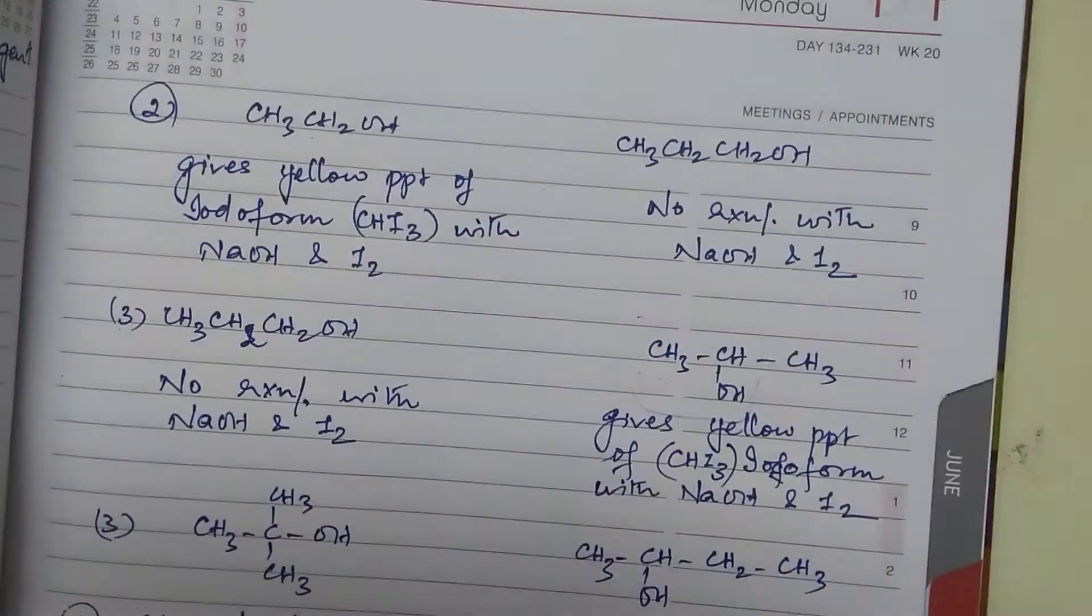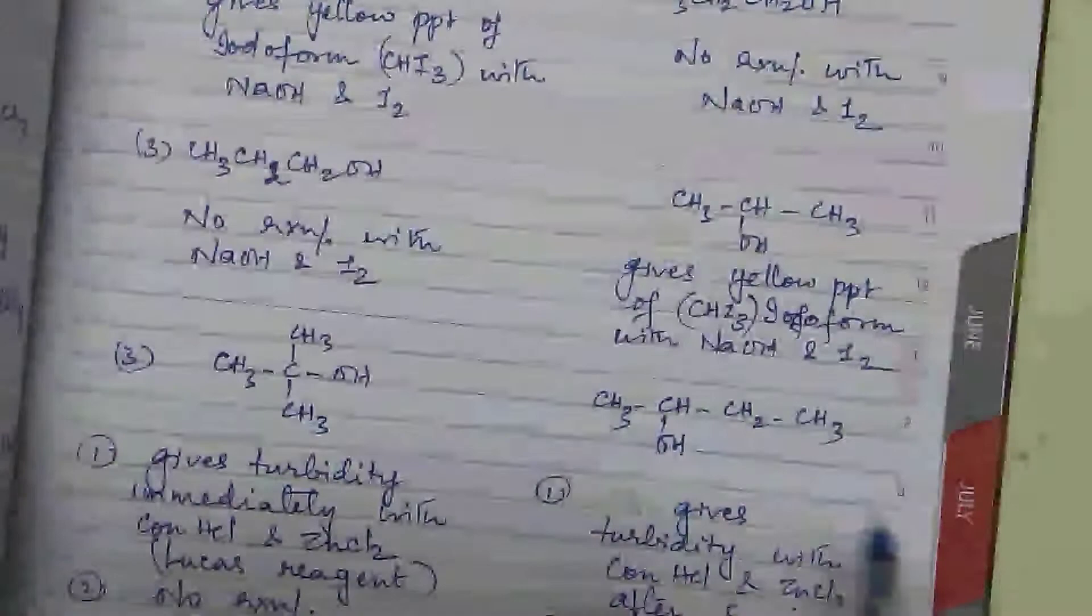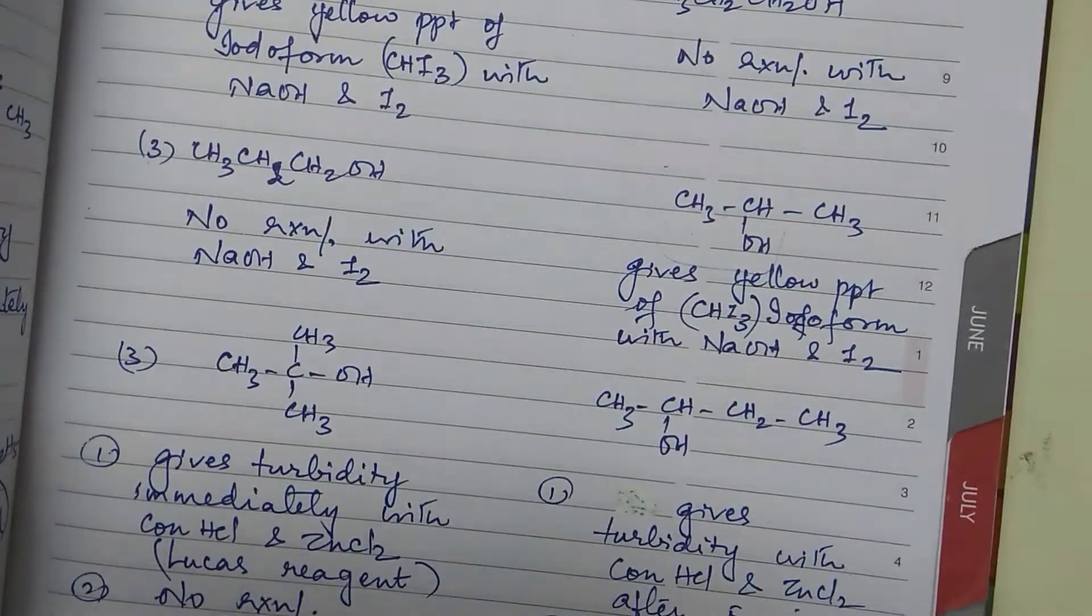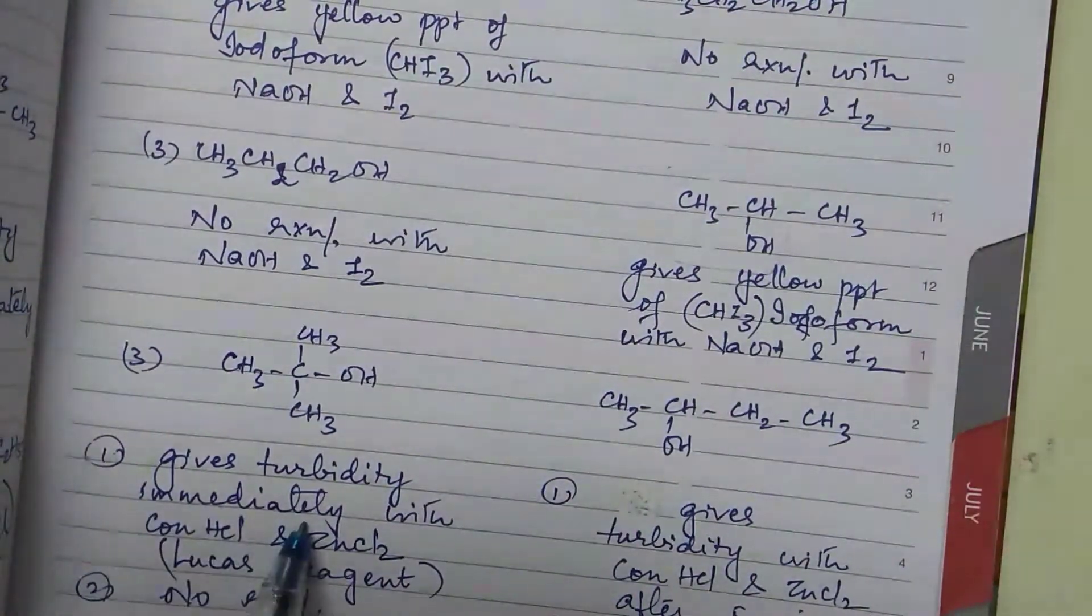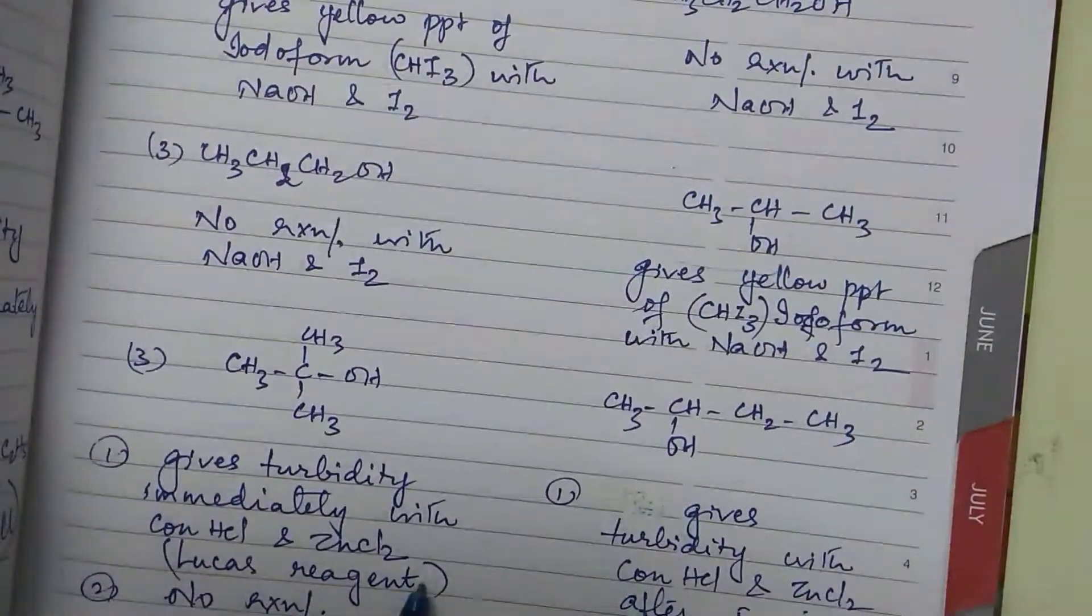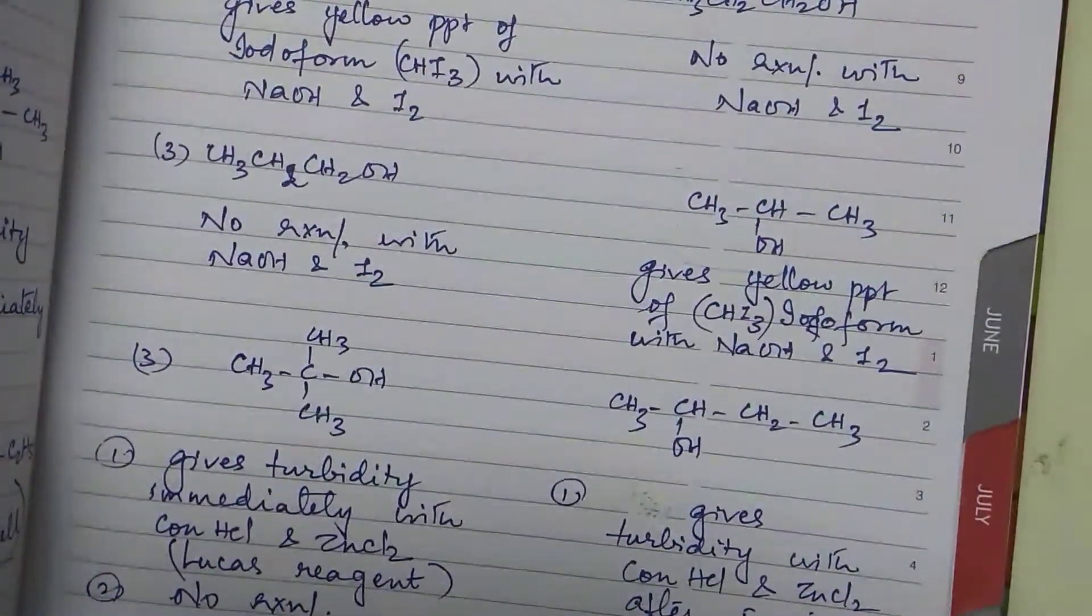Then you have tertiary alcohol and a secondary alcohol. Now secondary alcohol gives turbidity with Lucas reagent after 5 minutes whereas a tertiary alcohol gives turbidity immediately with Lucas reagent. It's good if you write Lucas reagent and if you write concentrated HCl and zinc chloride along with that it is all the more better.